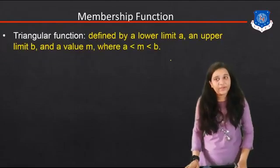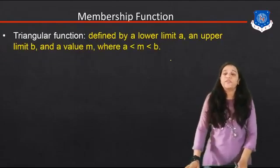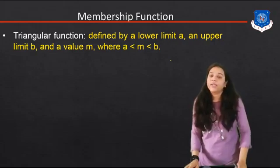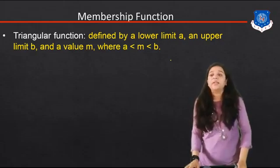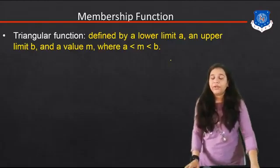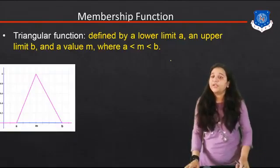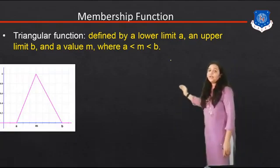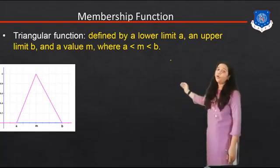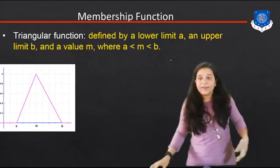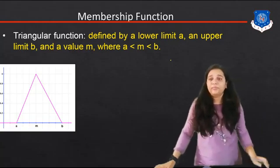The first membership function used in fuzzy logic is the triangle function. It is defined by a lower limit A, an upper limit B, and a value M, where A is less than M and M is less than B. On the graph, the x-axis shows the lower limit A, the upper limit B, and the value M where A < M < B.